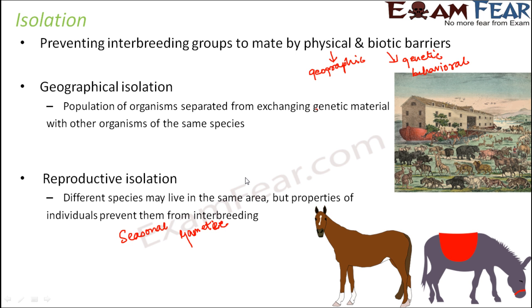Another reason for reproductive isolation could be hybrid sterility. In many organisms, the hybrids which are produced are sterile. For example, when reproduction happens between a male horse and a female donkey, or a female horse and a male donkey, the hybrids produced are sterile — not capable of reproduction. So obviously, reproductive isolation comes into picture.